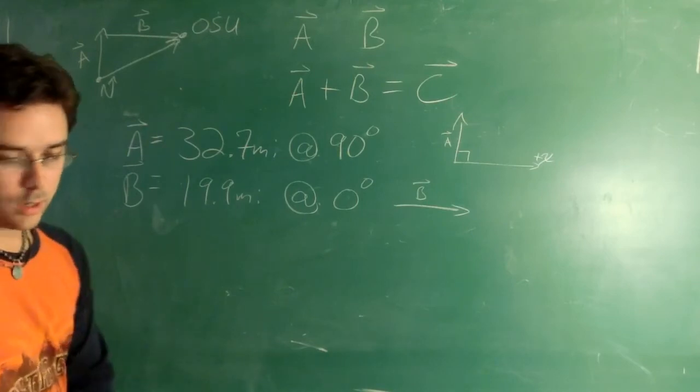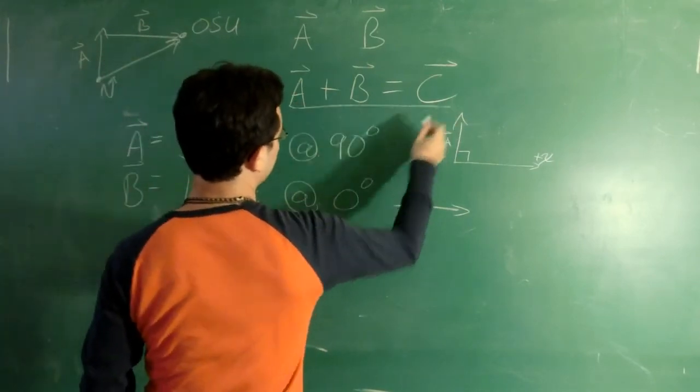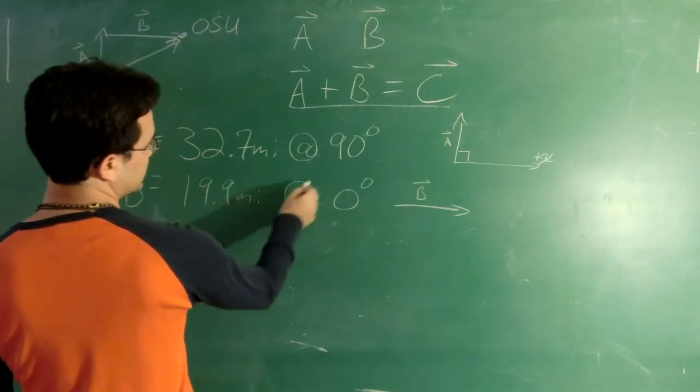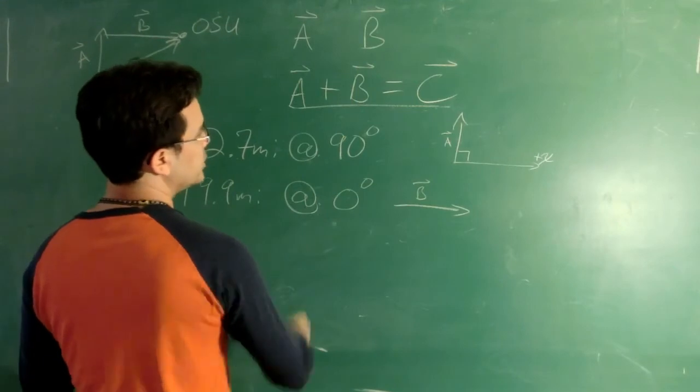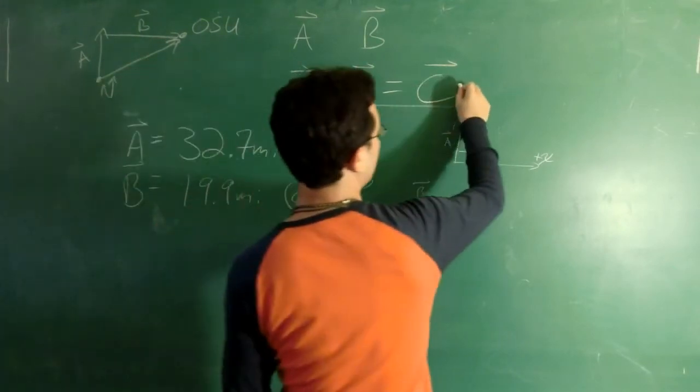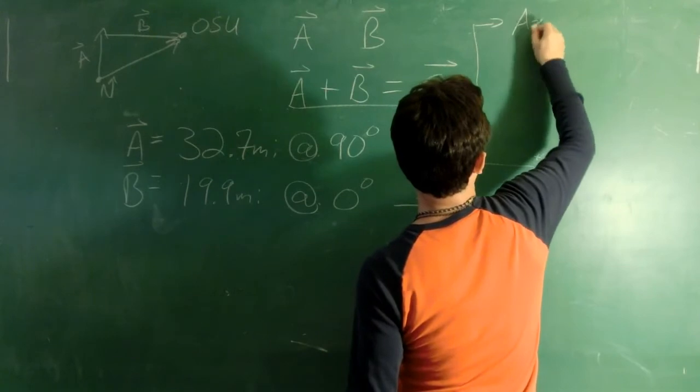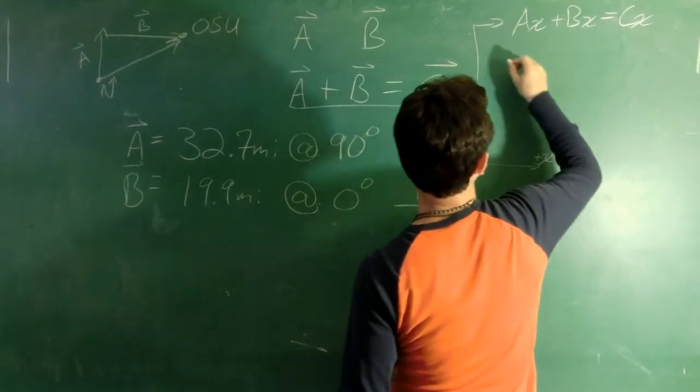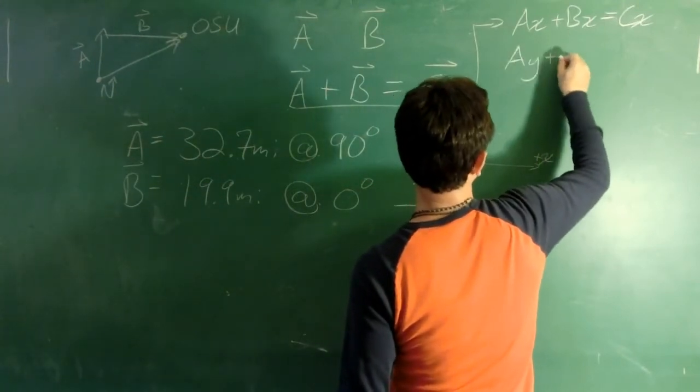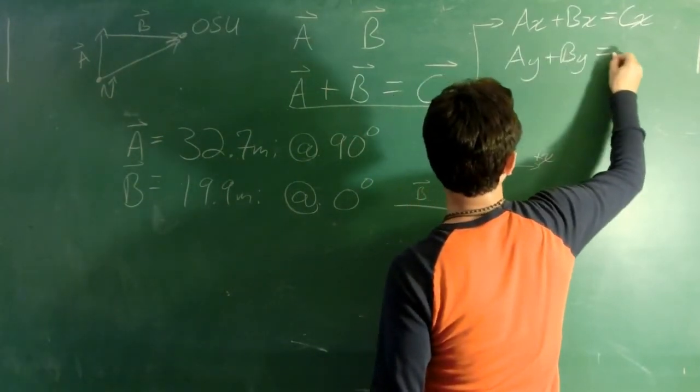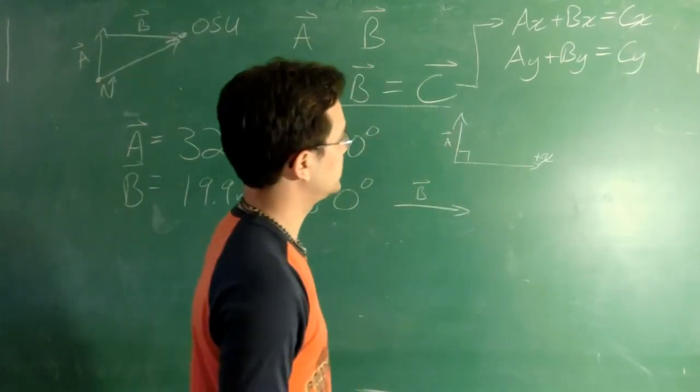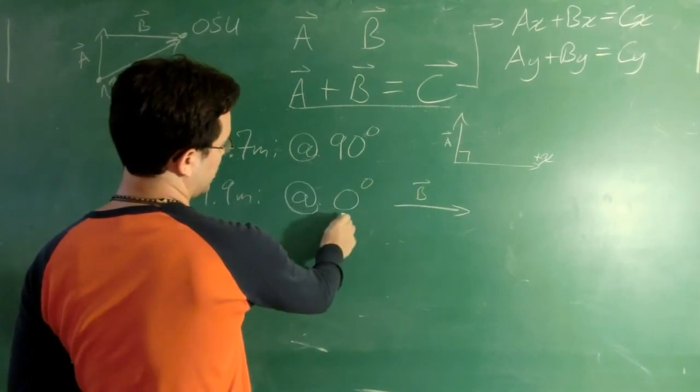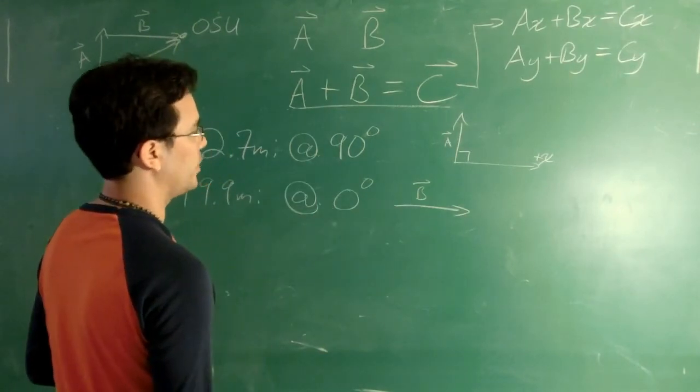So, as we've seen before, this guy is what we want to do, but we can't just add them together, because that's just adding these numbers. It doesn't take into account these directions. So we need to split this guy up into Ax plus Bx equals Cx, and Ay plus By equals Cy. When we do this, we're splitting them up such that it keeps track of this direction for us. So that's something that we can do.